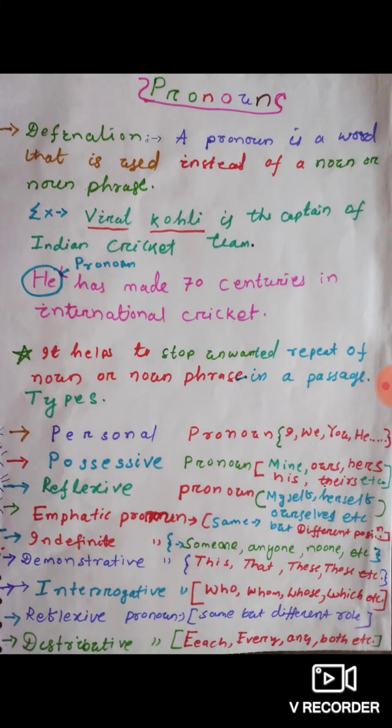Who, whom, whose, which are interrogative pronouns — they are used to ask questions. And relative pronouns have the same examples but a different role; they are not used to ask questions, they are used to connect clauses with a relative noun. And distributive pronouns include each, every, only, both. We will discuss these in detail in the next videos.